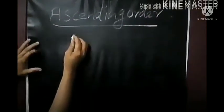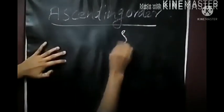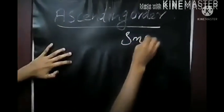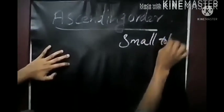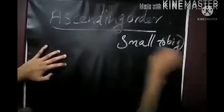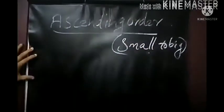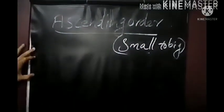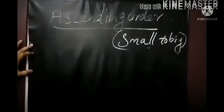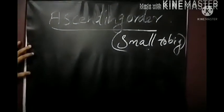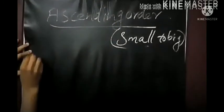What is ascending order? Ascending order means small to big. Arrange numbers from small to big — this is also called increasing order.